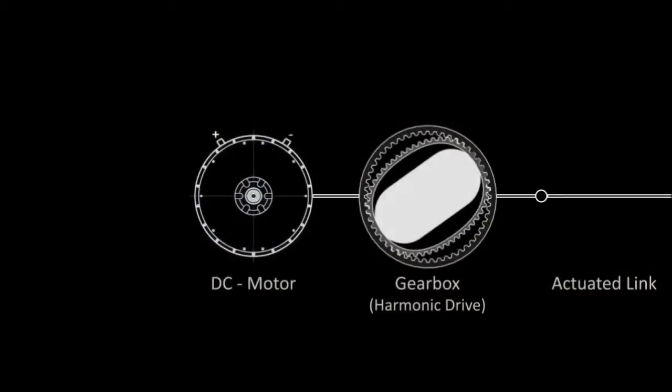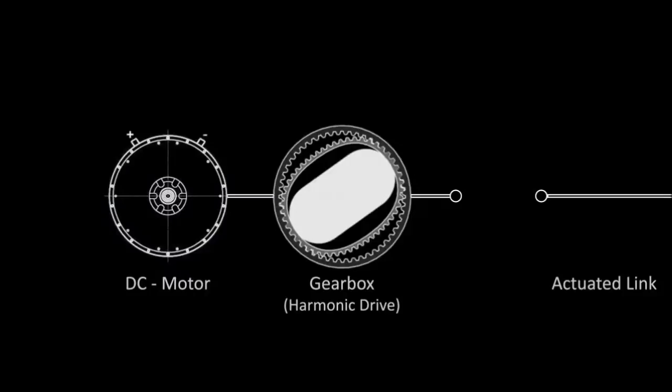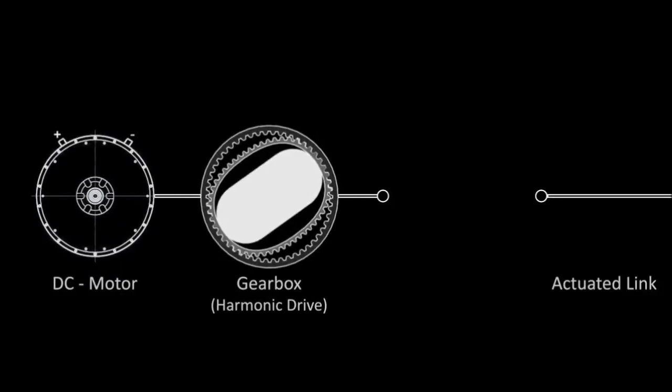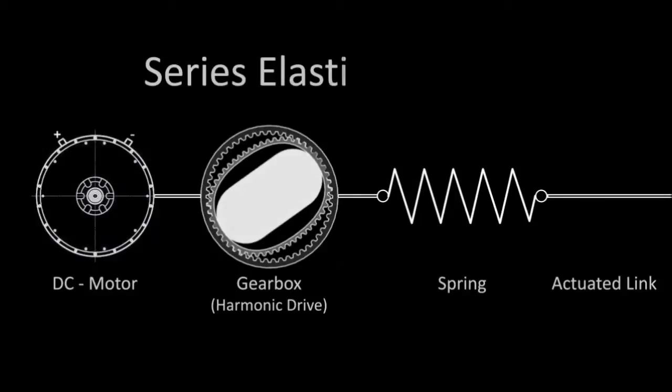Typically, in mechanical actuation, a motor is attached directly to what it is actuating. However, in order to mimic the biological muscle and take advantage of the energy storage capabilities, a spring was placed between the actuated link and the drive motor. This is called a series elastic actuator.